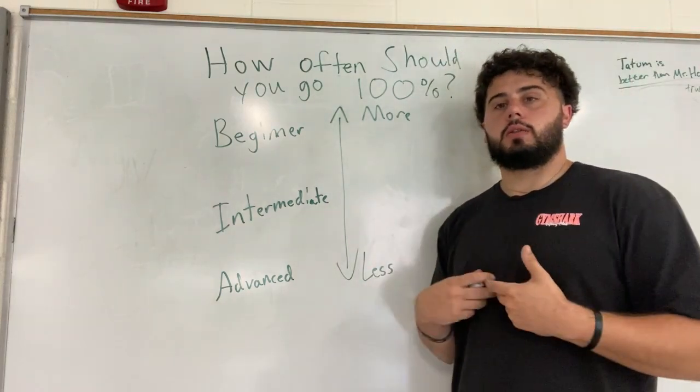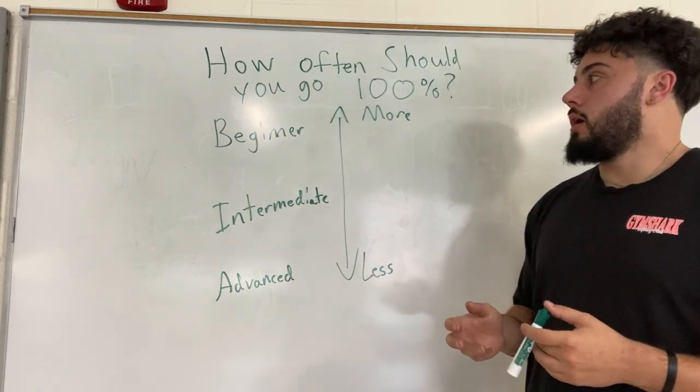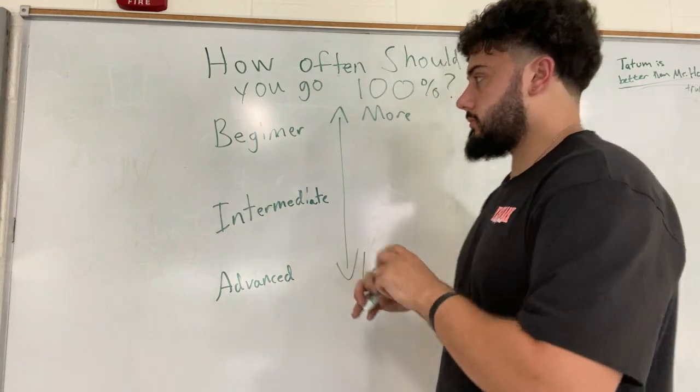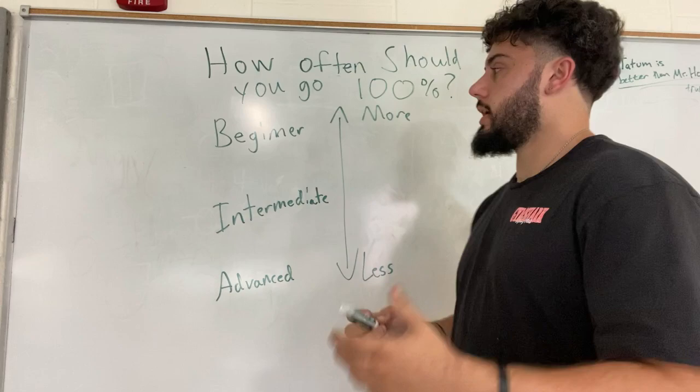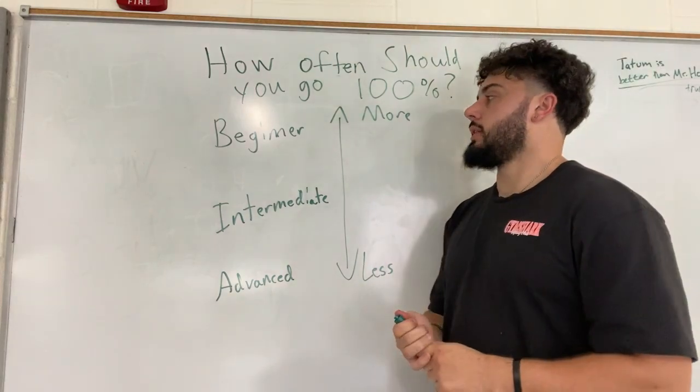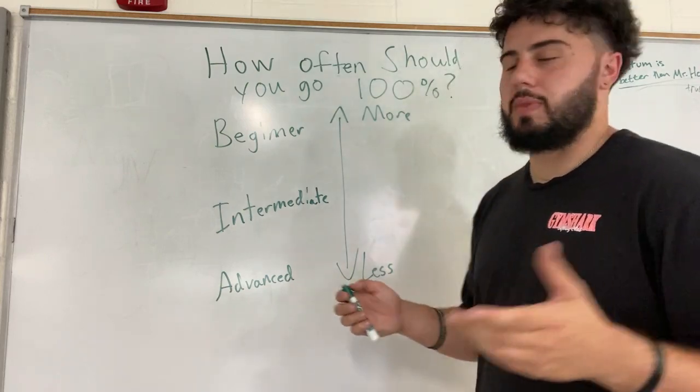no matter how weak you are and you can't get it out from underneath, it's still a 45-pound bar. You can afford to try harder as a beginner. That 45-pound bar is not going to break your ribs if you can't get it off.